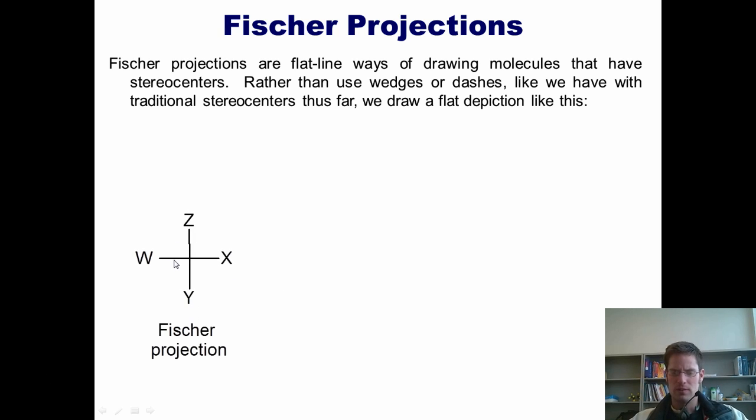Now, you may be looking at this structure and wondering how could this flat drawing possibly represent a traditional 3D structure like the ones that we've typically been drawing using wedged and dashed lines. Well, I'm glad you asked that question, me. Here's the answer. Whenever you see a Fischer projection like the one drawn here, what it's trying to tell you is that the two groups W and X that are drawn horizontally are coming towards us three dimensionally. Thus, when we see a Fischer projection drawn like this, what it really is depicting or trying to tell us is this.